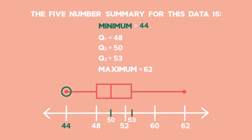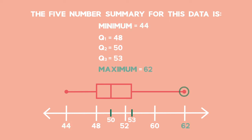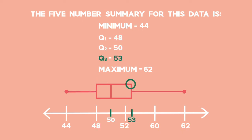The minimum is plotted, the maximum is plotted, and a line is drawn between them. Q1, Q2 and Q3 are drawn with lines down and then joined to form the box. And that's how we plot a box and whisker diagram.